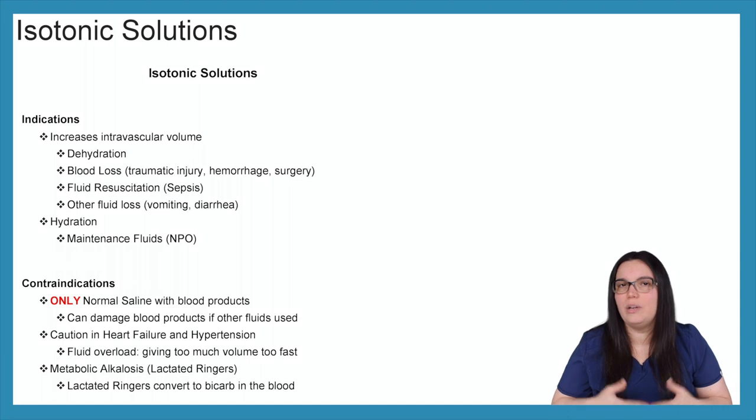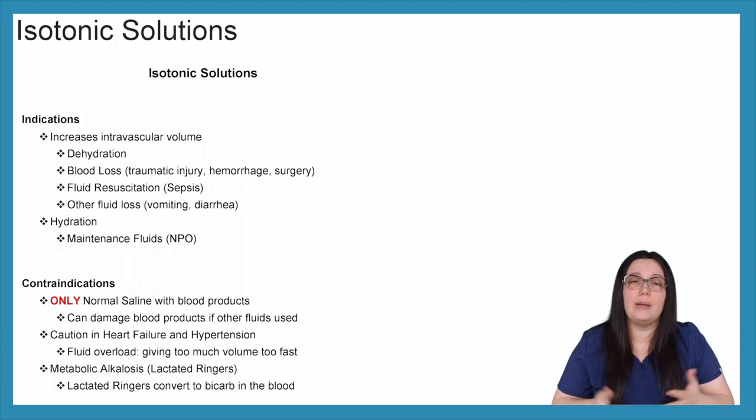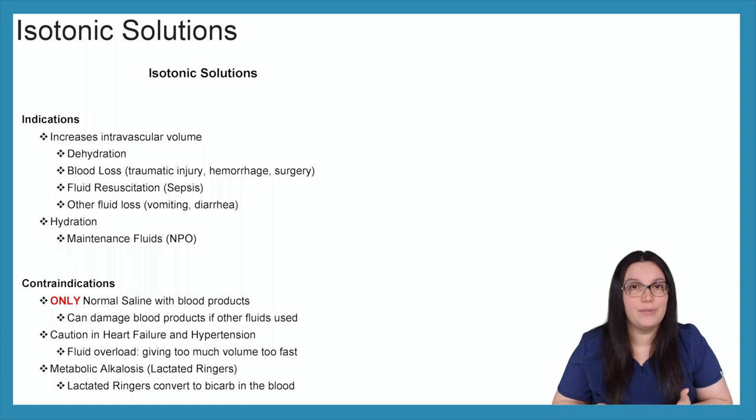Fluid resuscitation when it comes to our sepsis patients. As you know, with our sepsis bundle, we give 30 mls per kilogram of isotonic solutions. That would be fluid resuscitation for those patients as well as other fluid losses. If we have a patient that's vomiting or having massive amounts of diarrhea, this is a good medication that we can give in order to maintain fluid balance, specifically in our intravascular volumes. Hydration: if a patient is NPO for some reason, either because they have an upcoming surgery or they are unable to swallow for some reason, this is also another form of maintenance fluid that we can give to help hydrate our patients.